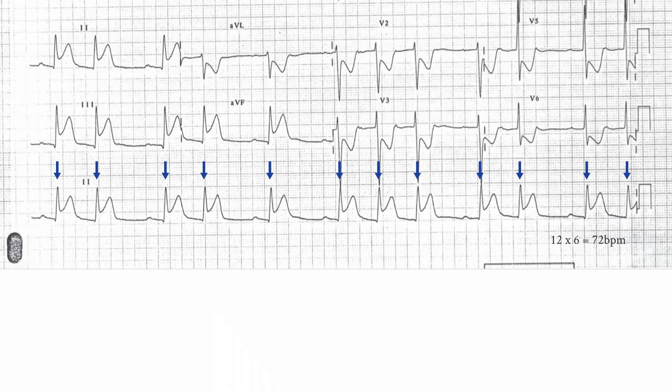The rhythm is difficult to be certain about. There are 12 beats recorded on this ECG, and the rhythm is clearly irregular. Some of these beats are preceded by what appears to be atrial activity, i.e. P-waves, and when P-waves are present, they're conducted with a PR interval which appears to be constant. These are therefore sinus beats.